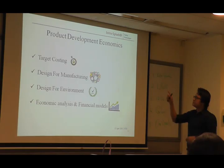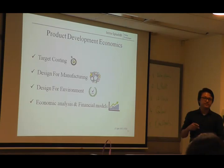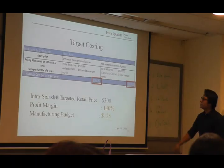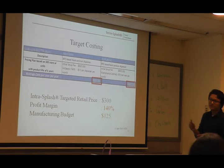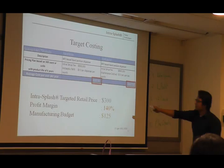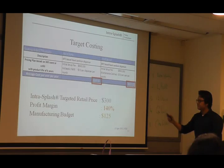Hi, I'm Situ. Today I'm going to talk about our development economy: first, target costing, GFN, DLP, and our projected cash flow. For our target costing, we took two similar existing products in the market, took their pricing plans, and narrowed down to these two average numbers. We set our targeted price at $300 with a profit margin of 140%.